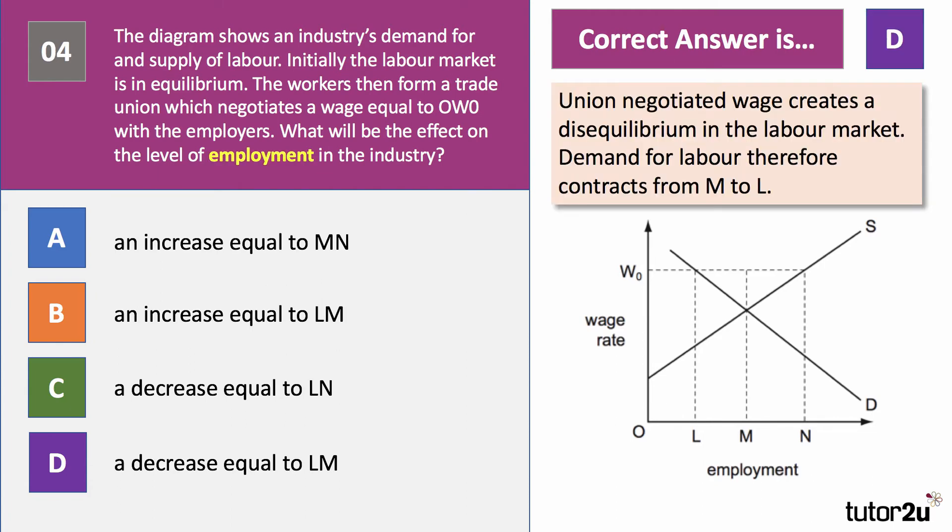The answer is D. Quite a few students initially misread it as unemployment. It is true that in this situation, if you have an equilibrium wage of W0, that creates excess supply of LN. However, this is about employment. Initially, the employment level was M. When the wage rate goes up, you move up the labour demand curve to a level of employment L. Therefore, there is a decrease in employment equal to LN.